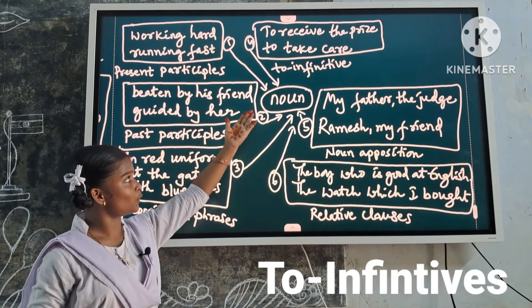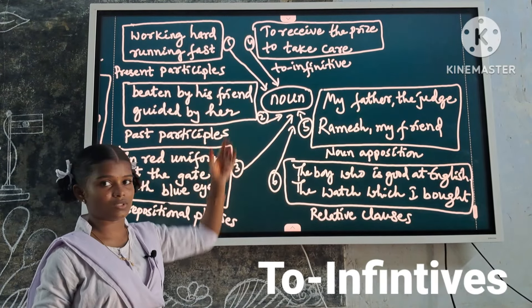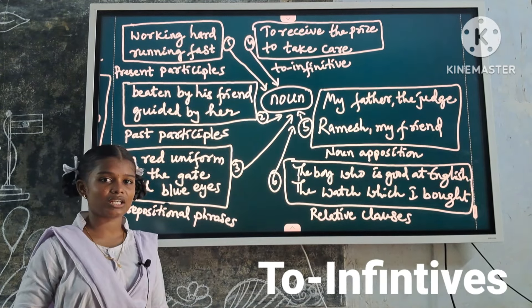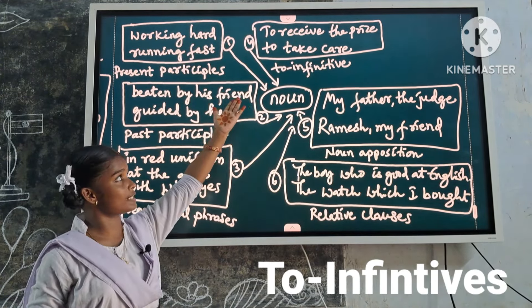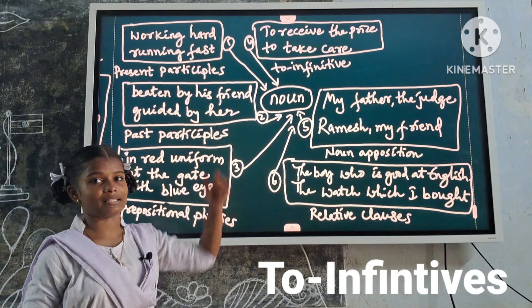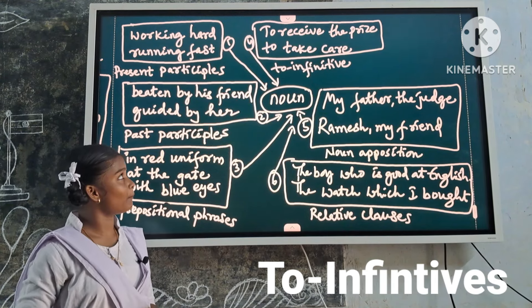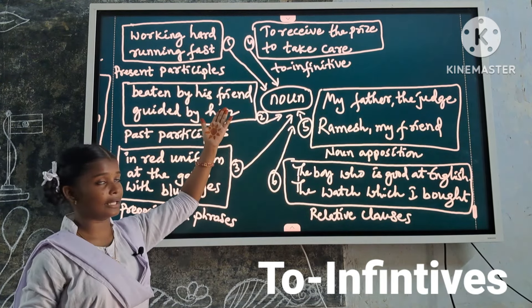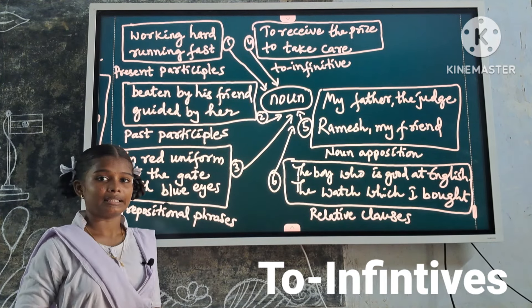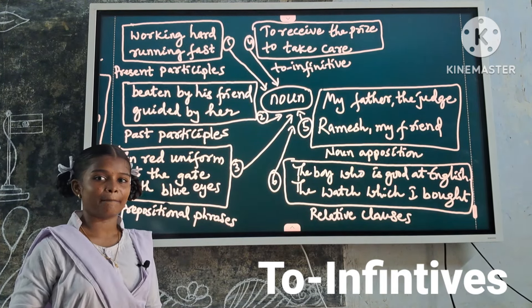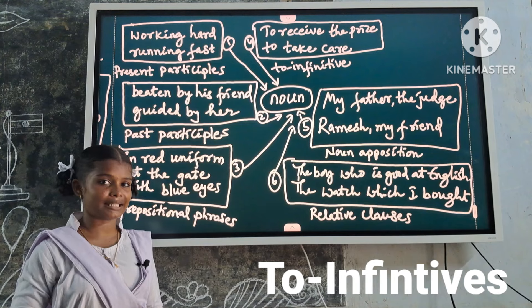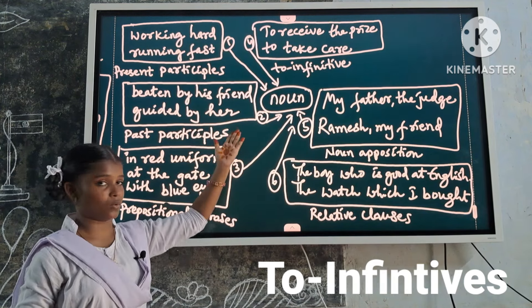Next one: to-infinitives as post-noun modifiers. Examples: the boys to receive the praise, the boys to take care. These are noun modifiers because they describe the noun.